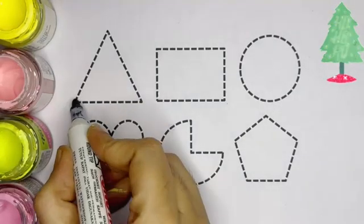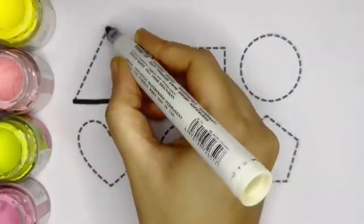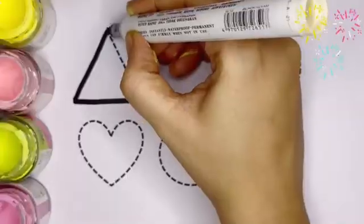Kids, now let's draw the shapes. Triangle. Kids, this is triangle.